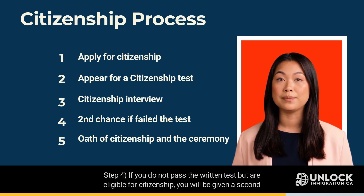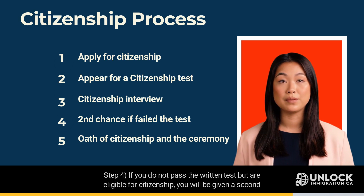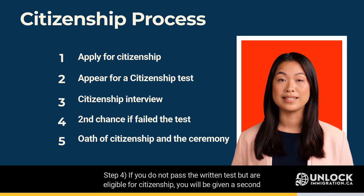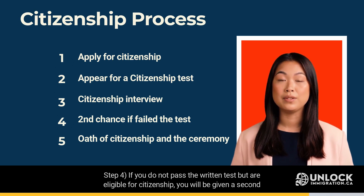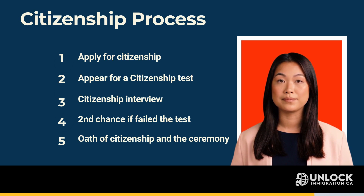Step 4: If you do not pass the written test but are eligible for citizenship, you will be given a second test date between 1 to 2 months. If you still do not pass the test, you will be asked to attend a hearing with the citizenship official.